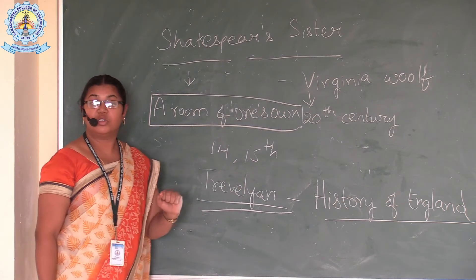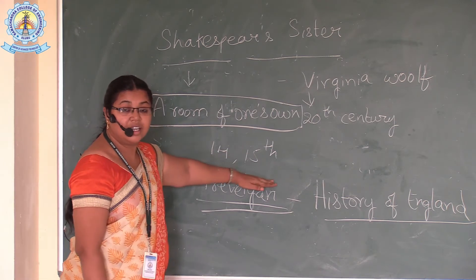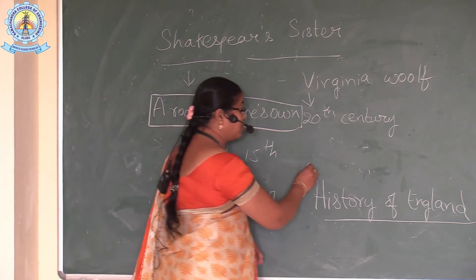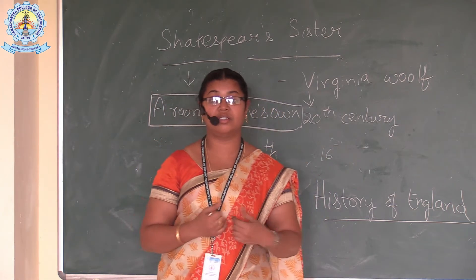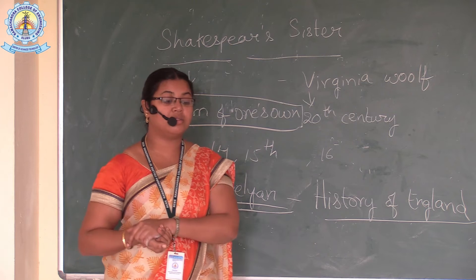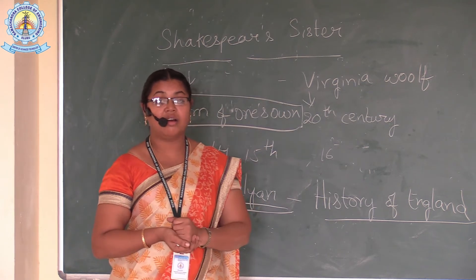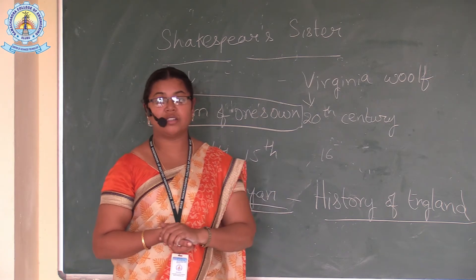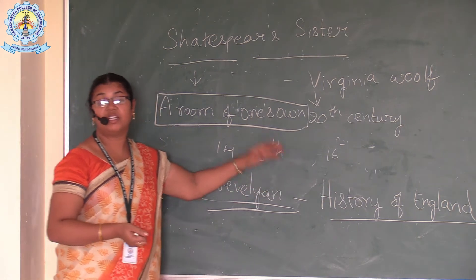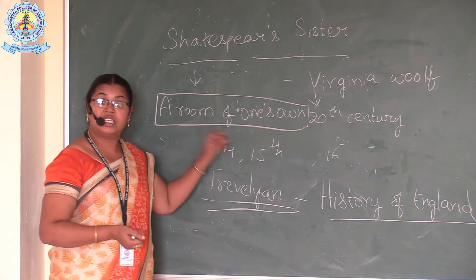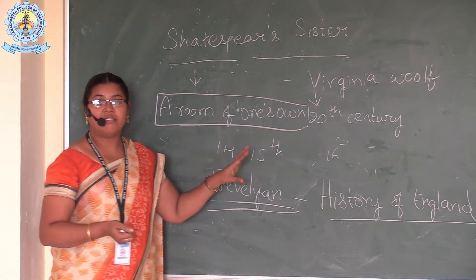Parents used to force girls to get married at the age of 14 or 15. If they rejected, they would be locked in a room and beaten. Virginia Woolf found these things in Trevelyan's work and was greatly disappointed. Even in the 16th century, marriage was not a personal matter — it always depended on the parents' interest.